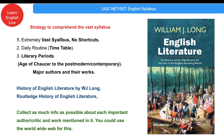Then we have the Enlightenment Age and Augustan Age with satirists like Pope, John Dryden, and Johnson. After that comes the Romantic period with William Wordsworth, John Keats, and S.T. Coleridge. Then the Victorian period, Modern Age — which generally starts after World War One — and then Post-Modern Age after World War Two. The syllabus is too vast, so divide it into different ages.